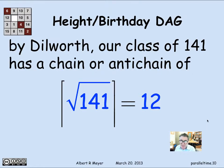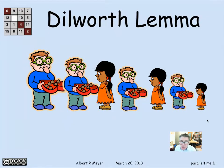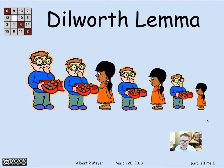According to Dilworth's lemma, in a class of 141 students, we're guaranteed to have a chain or an anti-chain in this product DAG of size at least √141, rounded up to 12. In this particular age-height graph, what does it mean to have an anti-chain?